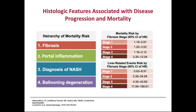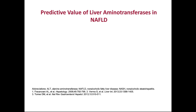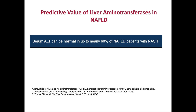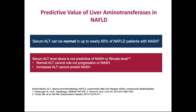The thing most practitioners get as an initial idea of whether somebody has liver disease going on is an estimation of aminotransferases, typically ALT. Serum ALT can be normal in up to 60% of NAFLD patients who actually have NASH — slightly better than a coin toss. ALT level alone is not predictive of NASH or fibrosis level. A normal ALT cannot rule out progression to NASH. Increased ALT cannot predict NASH. I would discourage the incorporation of ALT on its own as a screening tool or a risk stratification tool.